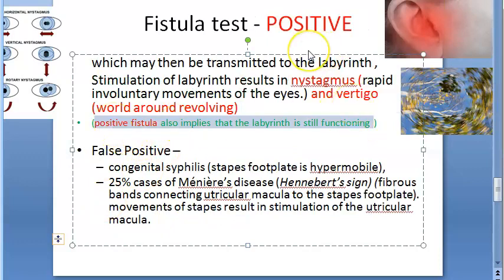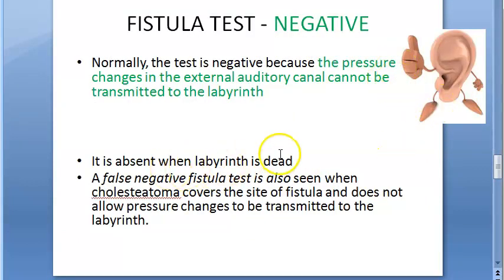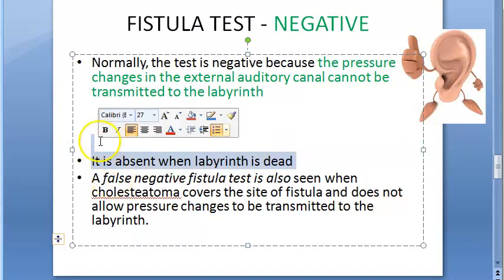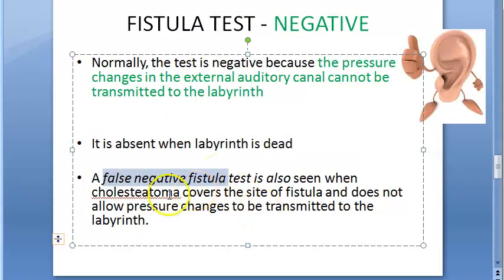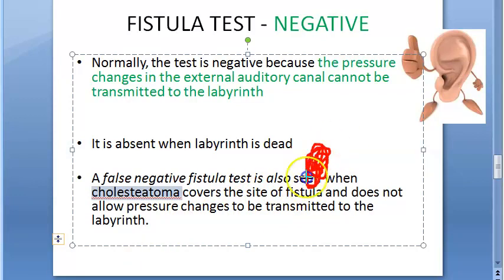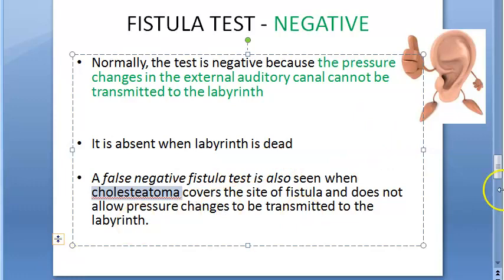A false negative can occur when there is a fistula but the test shows negative. This happens when the labyrinth itself is dead — there is a fistula, but since the labyrinth is not functioning, there is no nystagmus or vertigo response. A false negative fistula test can also happen if a cholesteatoma covers the site of the fistula, preventing pressure changes from being transmitted from the external auditory canal to the labyrinth.